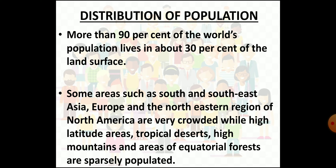Now let us look at the distribution of population. The way in which the population is distributed across the world is called the pattern of population distribution. This distribution is highly uneven. More than 90 percent of the world's population lives in about 30 percent of the land surface, meaning there are regions which are thickly populated because they have equable climate, adequate rainfall, flat land and fertile soil.